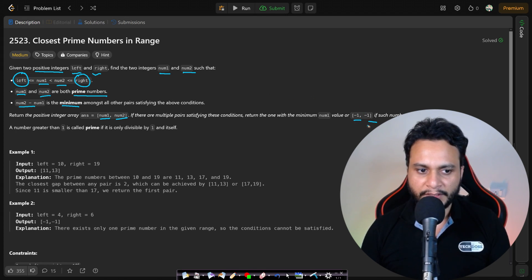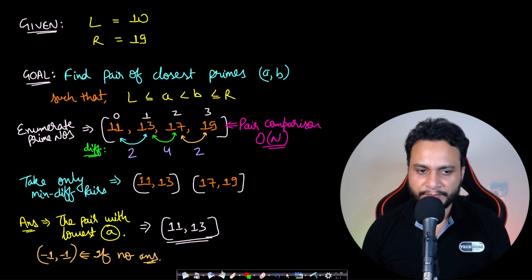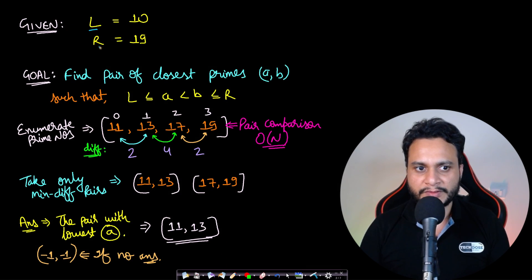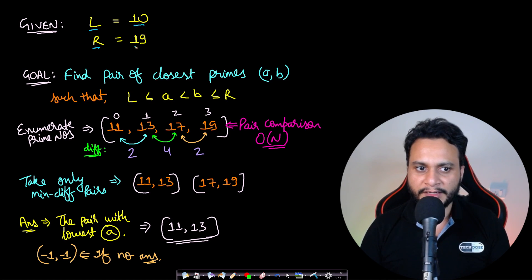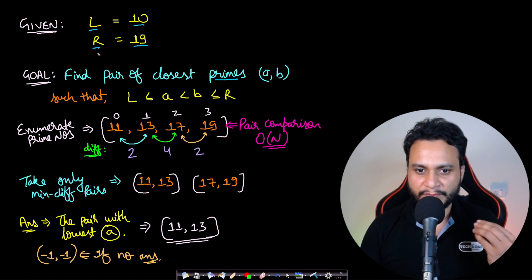Let's look at an example for better understanding. I am taking an example of left = 10 and right = 19. You need to find the pair of closest prime numbers in the range of left to right, inclusive of both left and right.